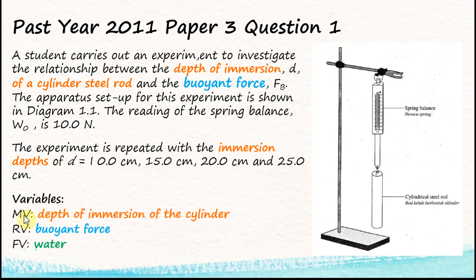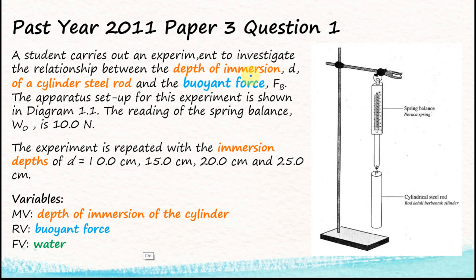So the manipulated variable is the depth of immersion of the cylinder, and the responding variable is the buoyant force. To find the fixed variable, we must identify what other variables affect the buoyant force.